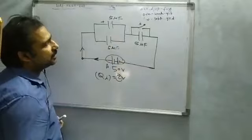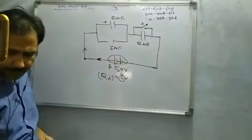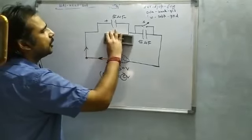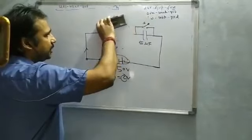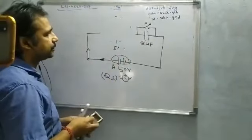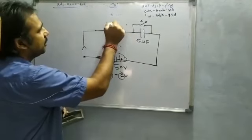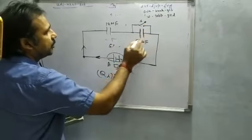Now this is parallel. So equivalent of this will be what? I have described this already. And equivalent of this will be 10. So this will be 10 microfarad. This is 5 microfarad.